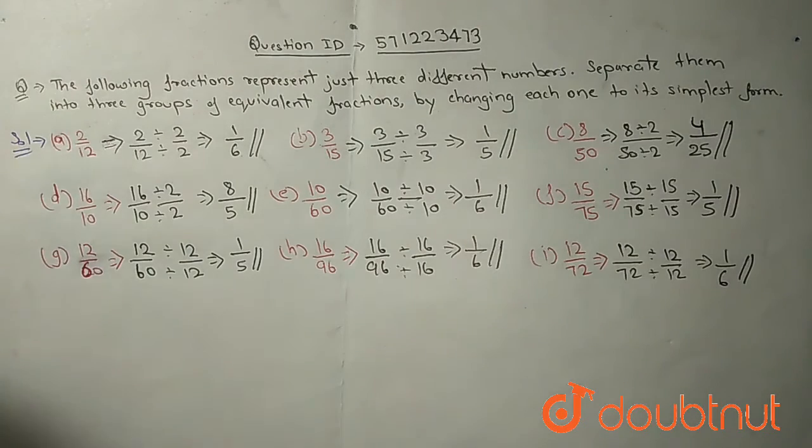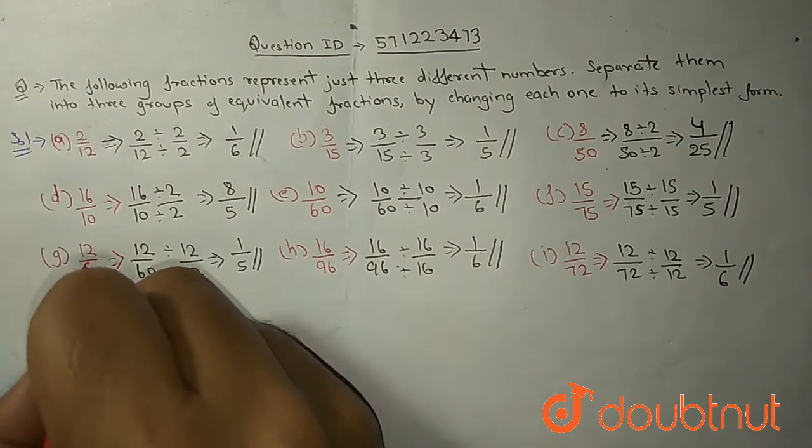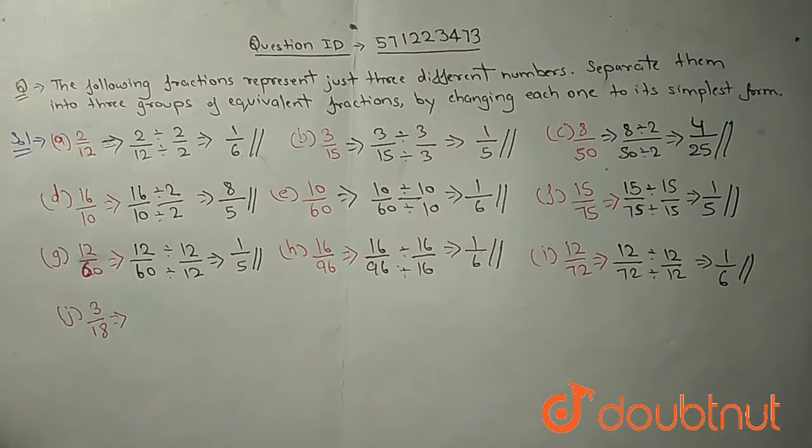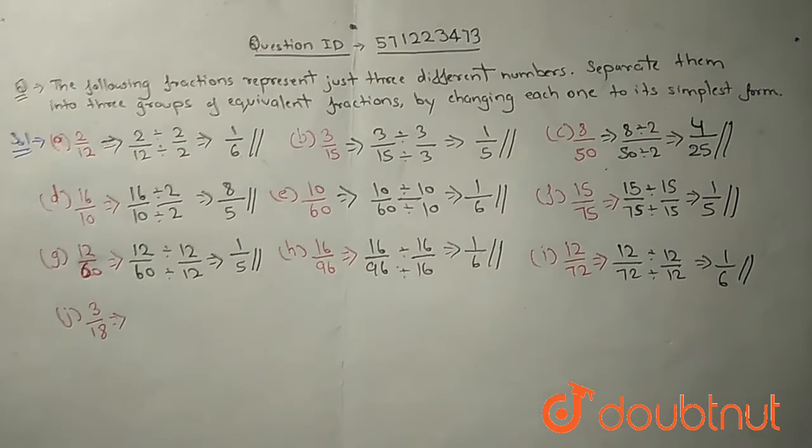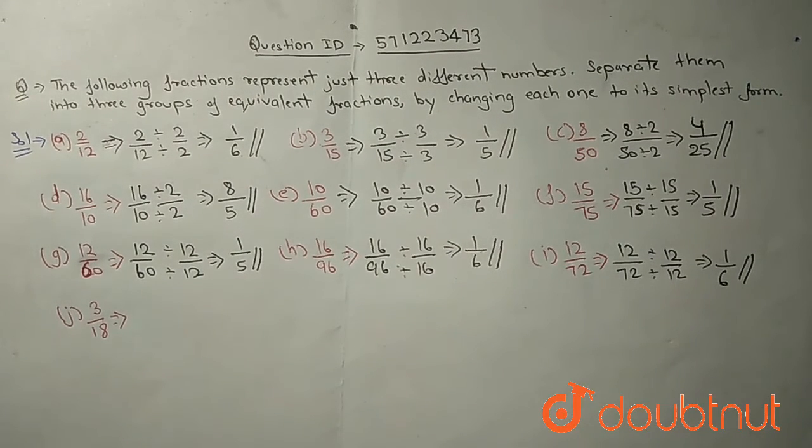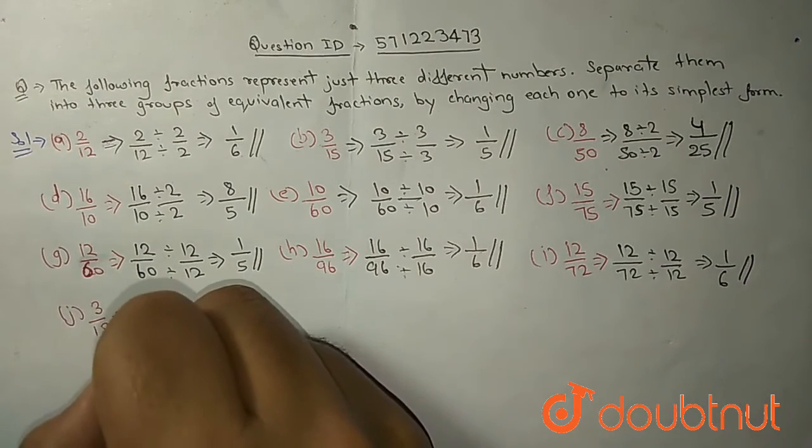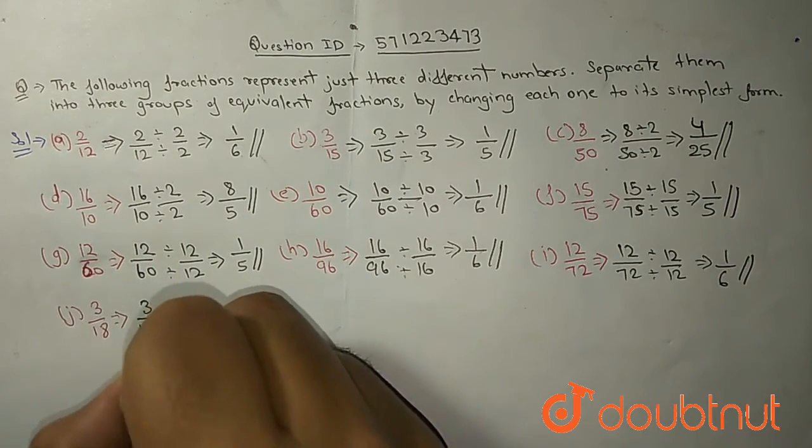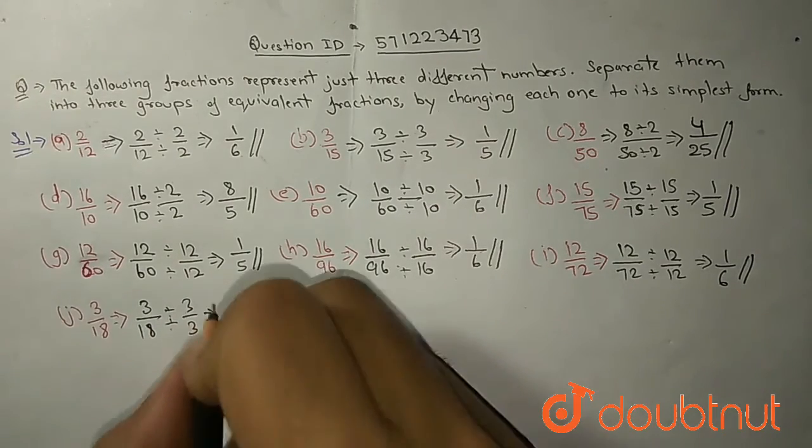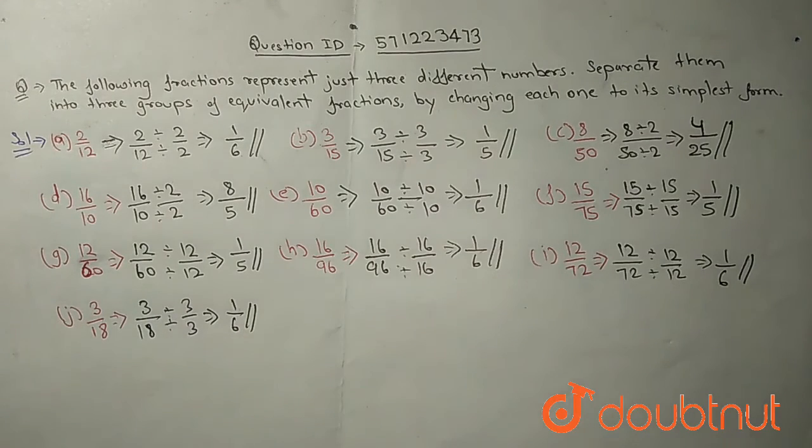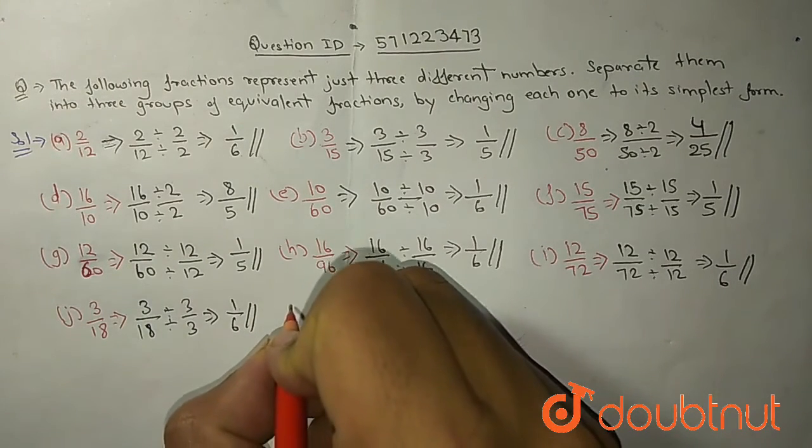Now moving towards J part. J part is 3 upon 18. Does 18 come in 3 table? Yes. Does 3 come in 3 table? Yes. At how many times does 18 come in 3 table? At 6 times. So we can divide 3 upon 18 with 3 on numerator as well as denominator and we will get 1 upon 6.